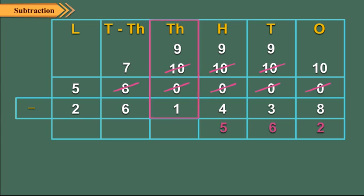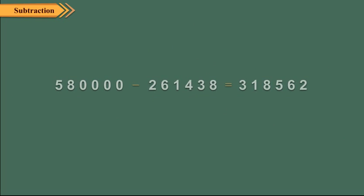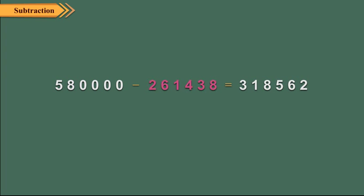Now, starting from the ones column, go on subtracting the tens, hundreds, thousands, ten thousands, and lakhs digits. Hence the difference between 580000 and 261438 is 318562.